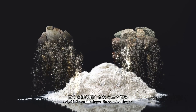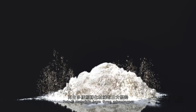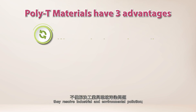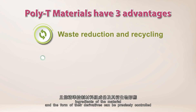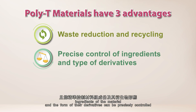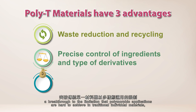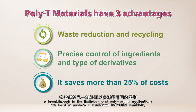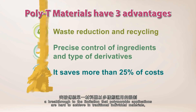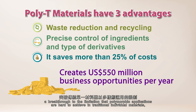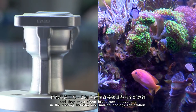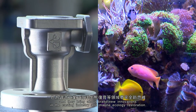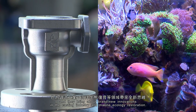Poly-T materials have three advantages: they resolve industrial and environmental pollution; ingredients of the material and the form of their derivatives can be precisely controlled; and they represent a breakthrough to the limitation that polymorphic applications are hard to achieve in traditional individual materials, bringing brand new innovations in the casting industry and marine ecology restoration.